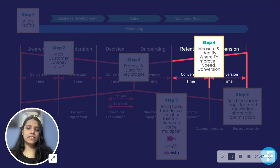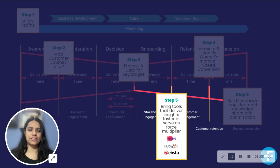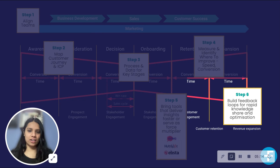Fourth, measuring and improving speed and conversion is an ongoing effort. Regularly evaluating processes, trimming the tech stack, and introducing efficient tools enhance overall efficiency. Fifth, choosing the right tools from reliable vendors like HubSpot is key. Tools should evolve with business maturity, so make sure to assess existing tools for usefulness and replace them if necessary.